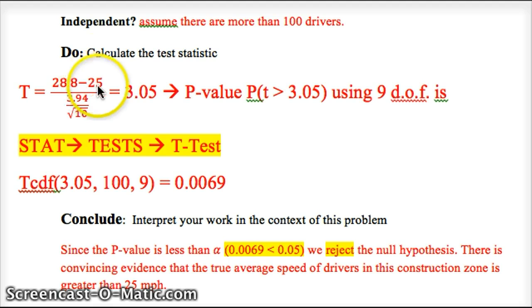So your calculator calculates the test statistic. Here's our sample mean minus the proposed parameter to see how far away, in terms of standard deviation, we are from 25. So 3.05. We know standardized scores, that means z-score, or in this case our test statistic is t, that are above 3 and below negative 3 are very rare.